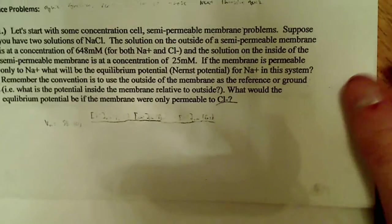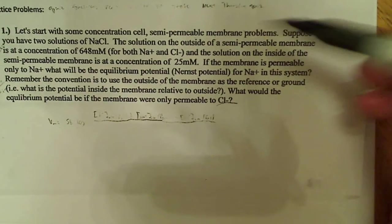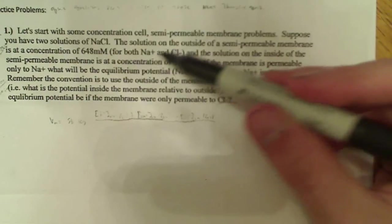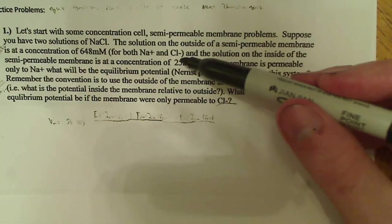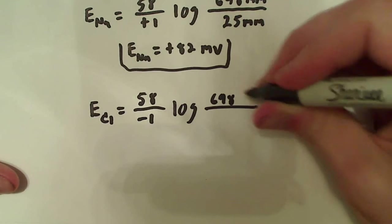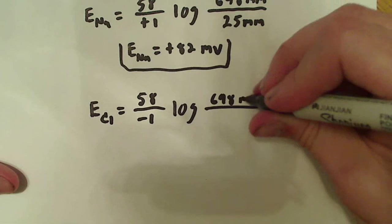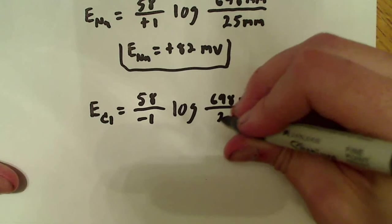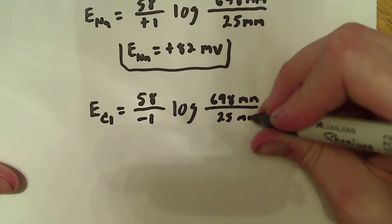And if we look at the problem again, it says here that this is the concentration outside for both Na plus and Cl minus. So, it's the exact same numbers. So, we end up plugging in the exact same numbers. So, 648 millimoles over 25 millimoles.